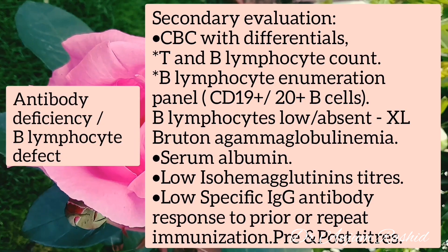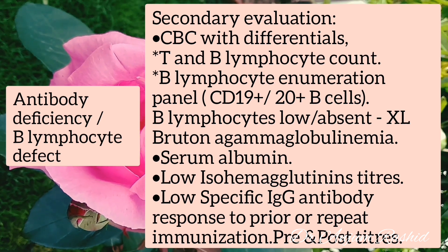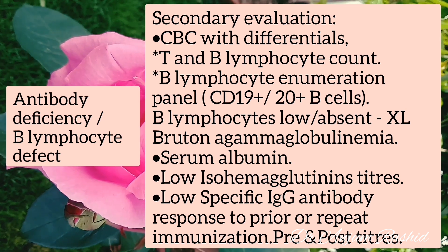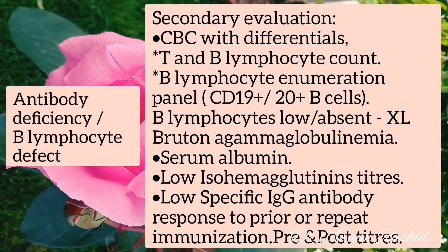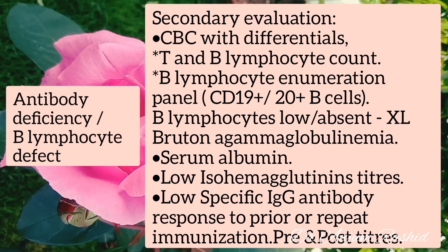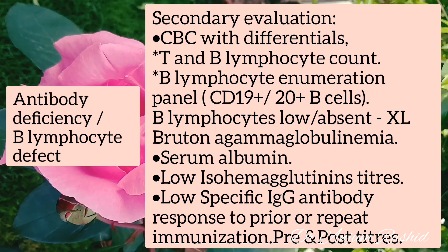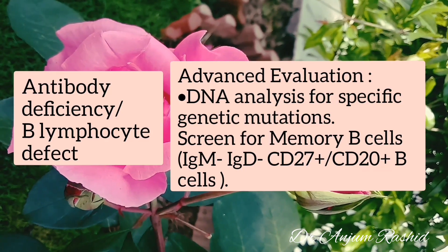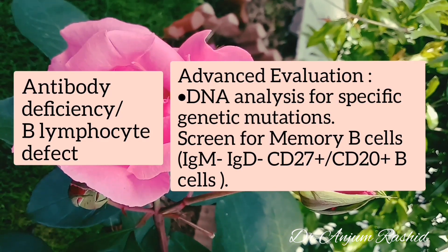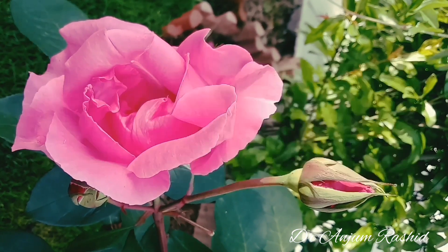The secondary evaluation for antibody deficiency includes complete blood cell count with differentials, T and B lymphocyte count, and B lymphocyte enumeration panel detecting CD19+ and CD20+ B cells — which may be low or absent in X-linked agammaglobulinemia. Serum albumin should also be checked for protein loss via gut or kidney. Isohemagglutinin titers are also low, and there is low specific IgG antibody response to prior or repeat immunization. Advanced evaluation includes DNA analysis for specific genetic mutations and screening for memory B cells.